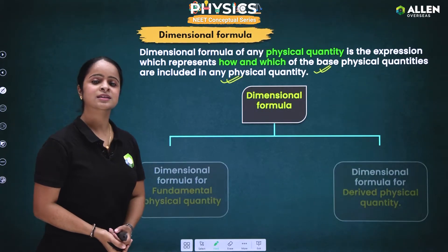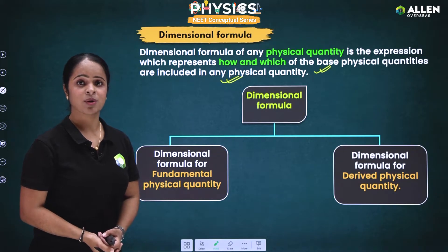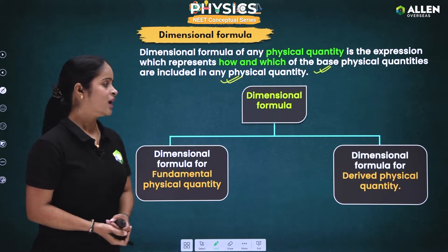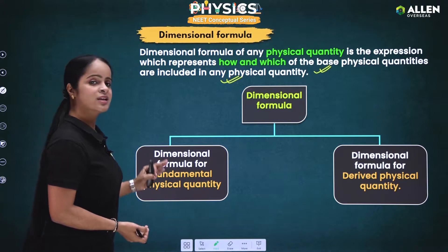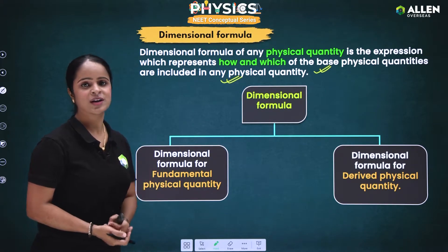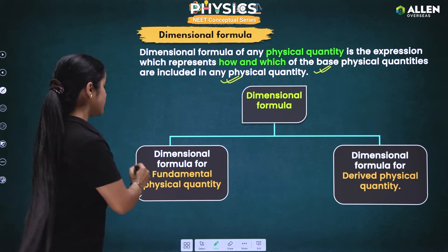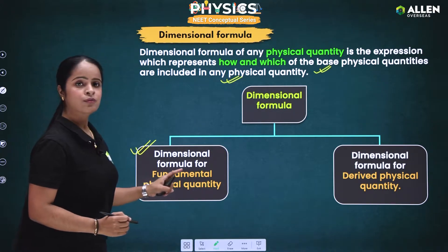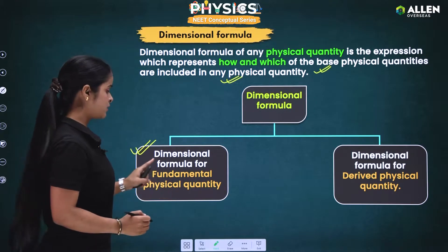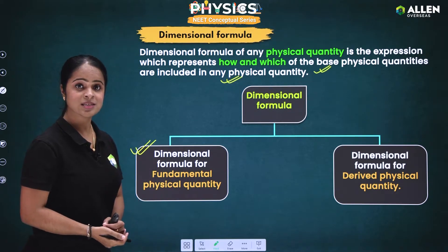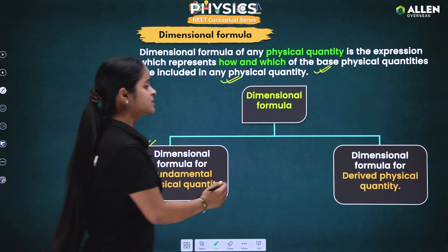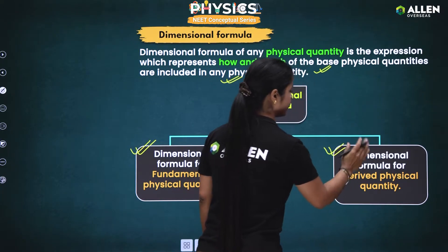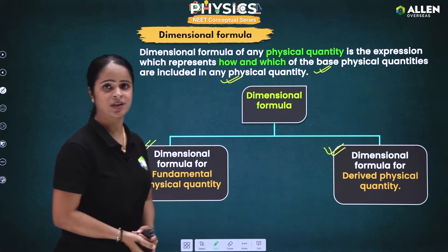Now let's move ahead to the next point. Here we are going to study about different types of dimensional formula. There are basically two types: the first one is dimensional formula for fundamental physical quantity, and the second one is dimensional formula for derived physical quantity.